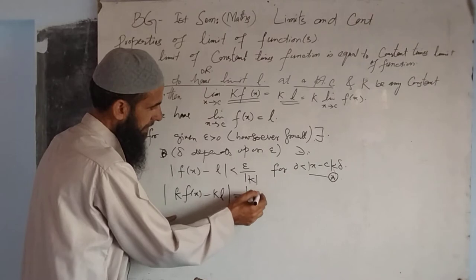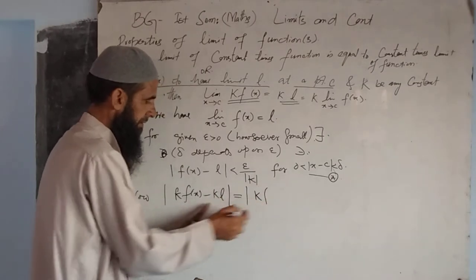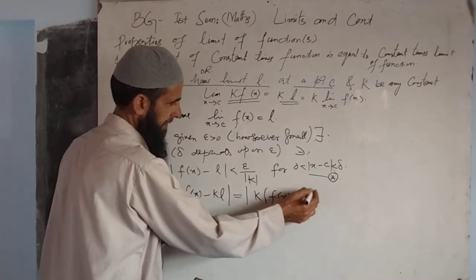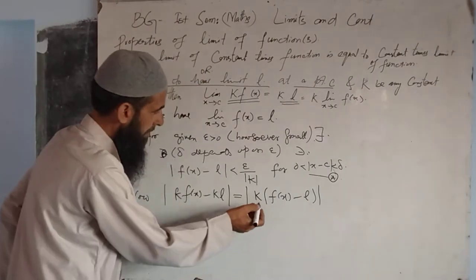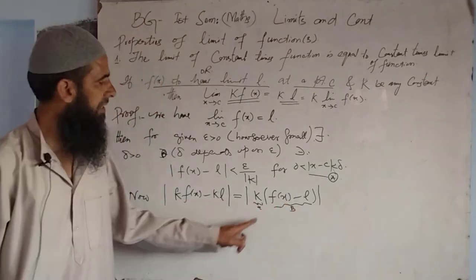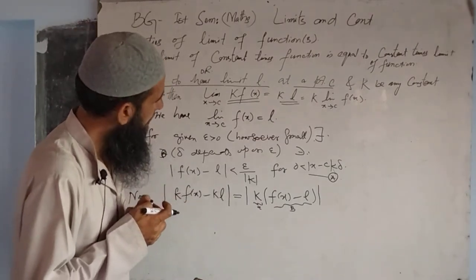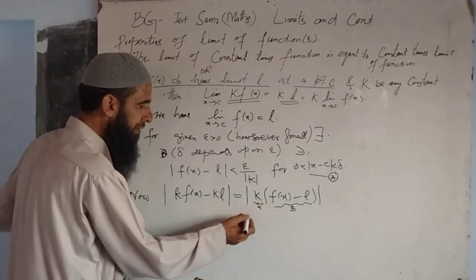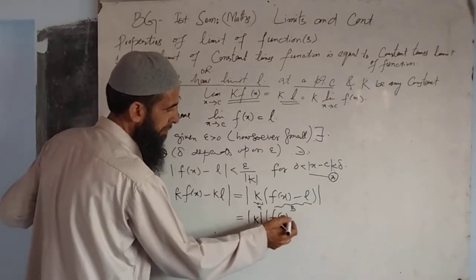We factor out k, so k times f(x) minus k times l becomes k times the quantity f(x) minus l. Taking the modulus, and applying the property of modulus of real numbers — modulus of a times b equals modulus of a times modulus of b — we get modulus of k times modulus of f(x) minus l.